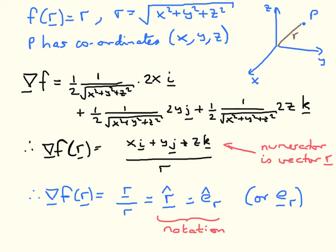These are just alternative notations for the same result. In terms of dimensional analysis, if R is a length then the scalar field has dimensions of length. Differentiating with respect to X, Y, or Z subtracts 1 from the dimension, going from length to the 1 to length to the 0. And that is exactly what we get — a unit vector with magnitude 1, dimensionless but with a direction pointing along R. With that, I'll move on to the next exercise.